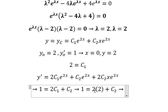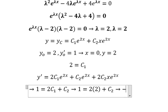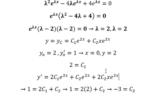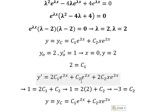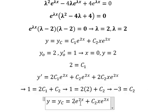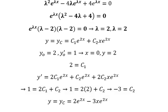We get two times two equals four, and one minus four gives us negative three. So c2 equals negative three. After finding c1 and c2, we substitute the values into the general solution with negative three here. This is the end — thank you for watching. Here is the full answer.